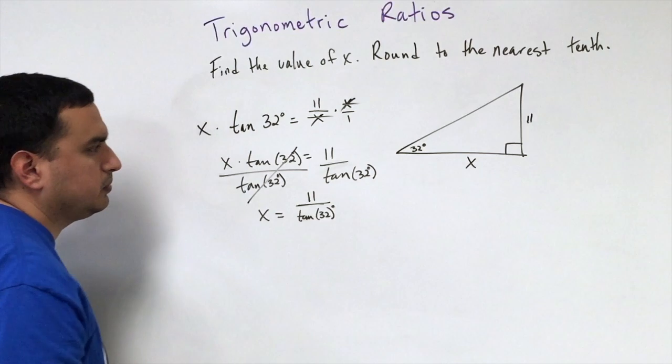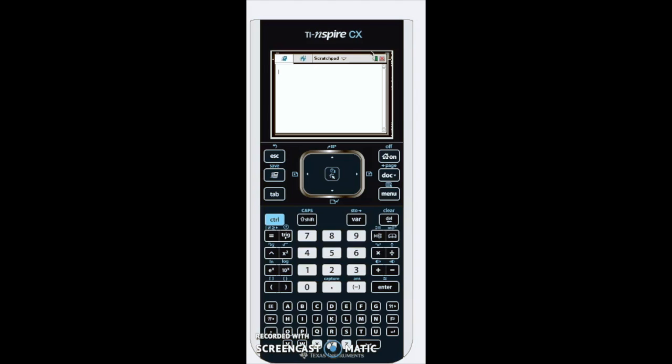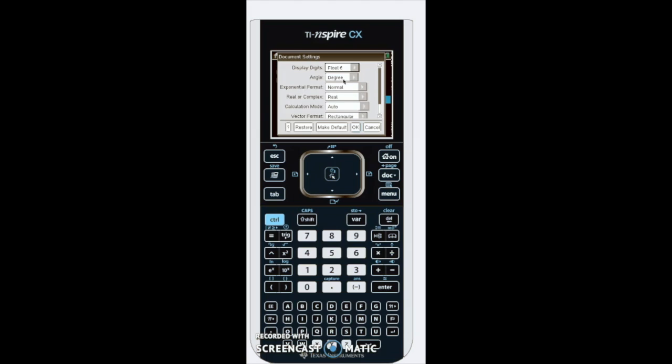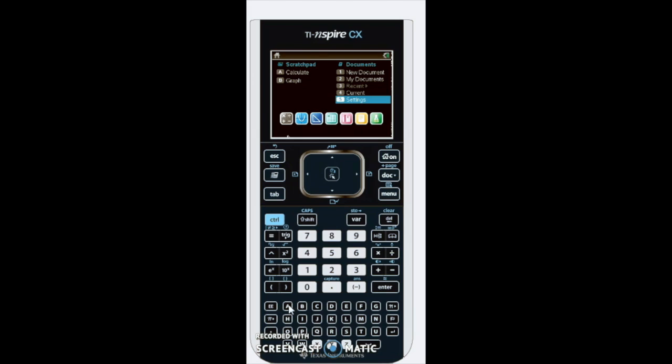To finish off this problem, we're going to need to use a calculator. What we want to do, regardless of the calculator we're using, is make sure our settings are set to degrees. I'm going to hit the home button and go here to settings, then change the document settings to make sure it's set to degrees. Then we need to go to our calculator screen.